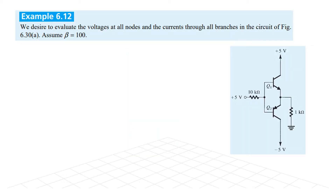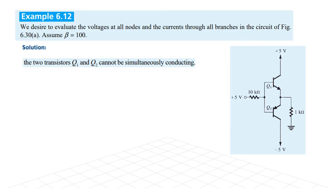Now we come to Example 6.12. Here we have the same complementary symmetry transistors. We desire to evaluate the voltages at all nodes and currents through all branches in the circuit, and beta is to be assumed as 100. The two transistors Q1 and Q2 cannot be simultaneously conducting as we have discussed.